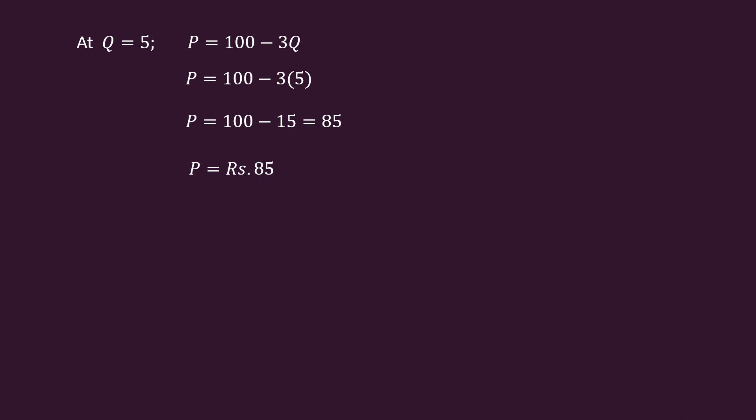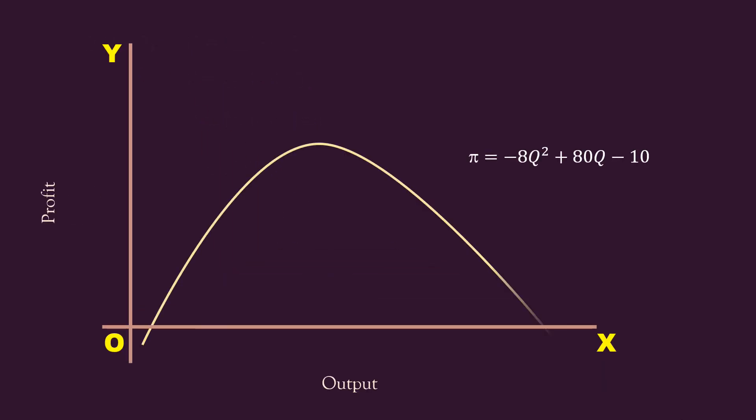At last, let us understand the problem with the help of a graph. Profit function represents this profit curve. When profit is maximum, output is 5 units. Maximum profit is 190 rupees.